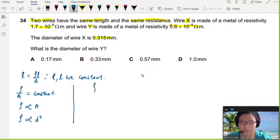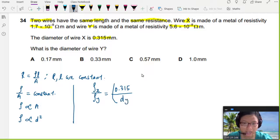we can now say that the resistivity of X over the resistivity of Y is equal to the diameter of X over the diameter of Y squared. What is the diameter of X? 0.315 over the diameter of Y squared. So we do know the resistivity of X is 1.7×10⁻⁸ over resistivity of Y, 5.6×10⁻⁸.